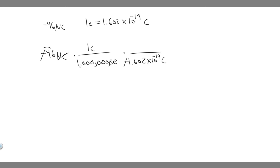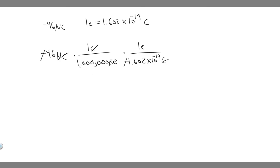Since this is negative, it has a negative charge, and one electron is going to have a negative charge. So one electron is equal to that value. The C's cancel, and we just do 46 divided by 1 million and then divide by 1.602 times 10 to the minus 19. When you do that, you get about 2.9 times 10 to the 14 electrons.